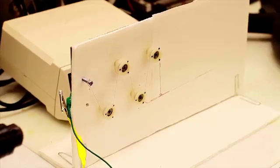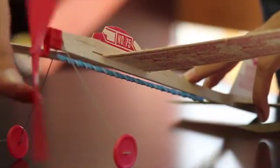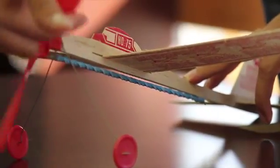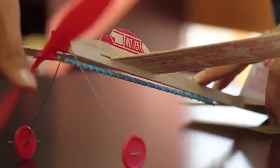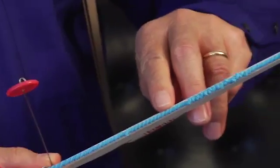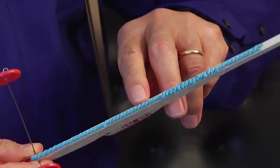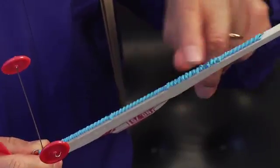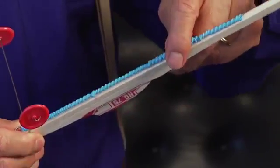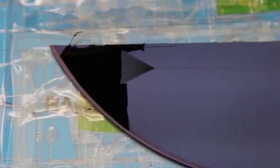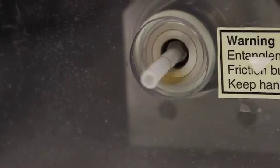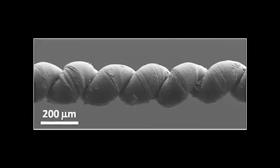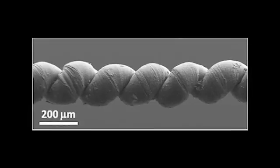Now, if I wind up the rubber band on this model aircraft — this is a twisted part of the rubber yarn and this is the coiled part. This coiling is extremely important in our obtaining very high actuation for our yarn.